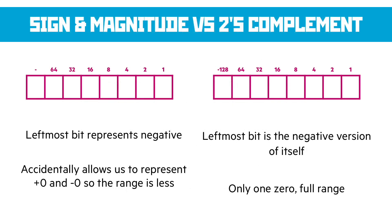Sign and magnitude versus two's complement are two different ways to store a signed value in binary. With sign and magnitude, the leftmost or most significant bit is given over to represent the negative indicator. However, this accidentally allows us to represent both plus zero and minus zero, which gives us less of a range. Two's complement is a more elegant system where the leftmost bit is simply the negative version of itself, giving us only one zero and the full range of numbers.